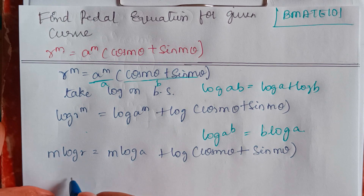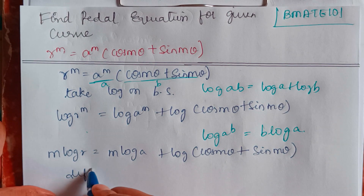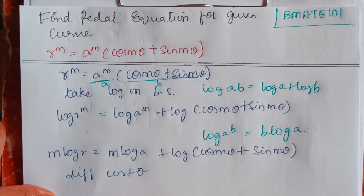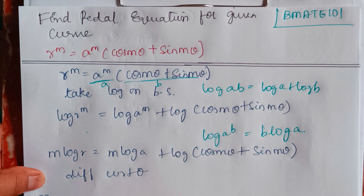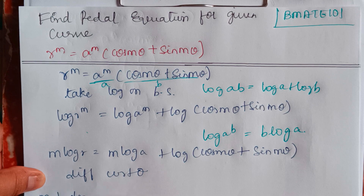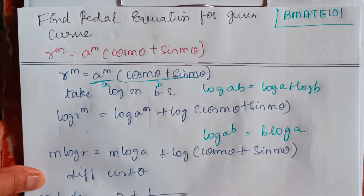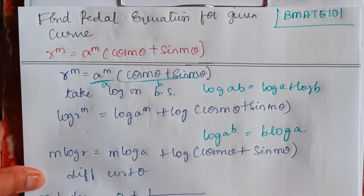Now differentiate with respect to θ. This becomes m × (1/r)(dr/dθ) equals 0 plus 1/(cos mθ + sin mθ) into...